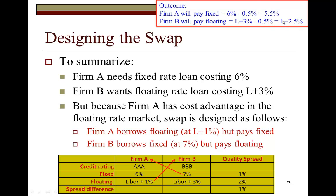So this is actually going to be the outcome. Rather than take out a fixed rate loan, which is what Firm A desires to do, Firm A would take out a floating rate loan at LIBOR plus 1% and then give it over to B. On the other hand, B would take out a fixed rate loan at 7% and then swap it over to A.